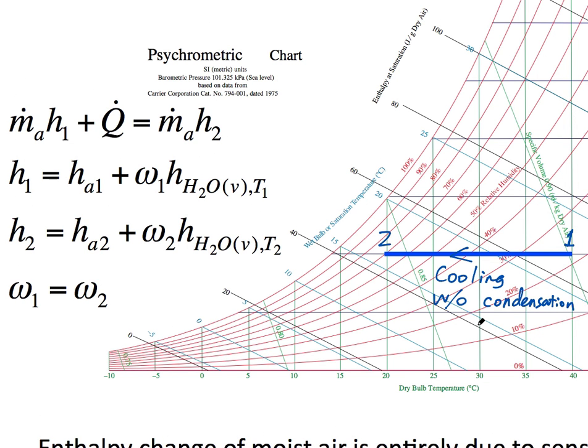Now let me ask you another question. Say right now, the early afternoon weather condition in Doha is that the dry bulb temperature is 40 degrees Celsius, and the relative humidity is 45 percent. I ask you to cool such a moist air to 25 degrees without water condensation, and draw that process on the psychrometric chart.